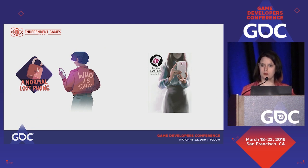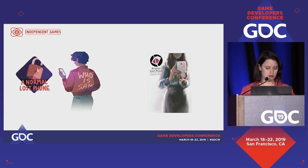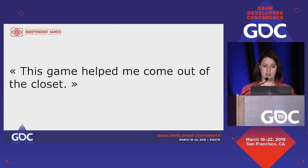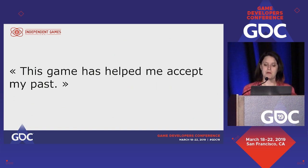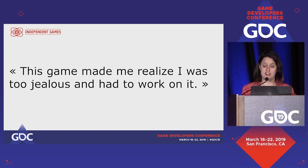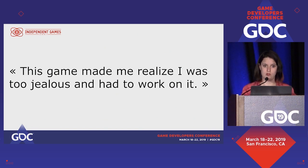We sold more than 200,000 copies of these games and they also had a real impact on a large number of people, as you can see from different messages we have received. 'This game helped me come out of the closet.' 'This game made me realize that I was homophobic and that I had to change.' 'This game has helped me accept my past.' 'This game made me realize I was too jealous and I had to work on it.' All these different reactions are what I call direct social impact — someone plays a game whose objective is to make them think about a subject and this game provokes a direct reaction.